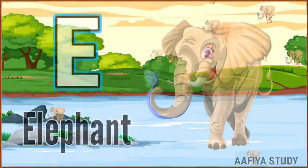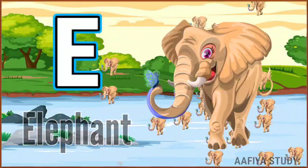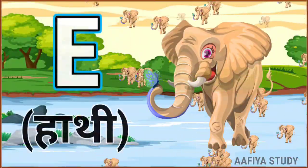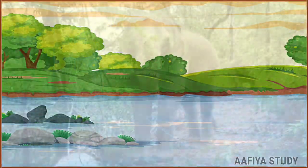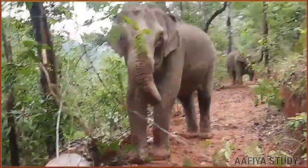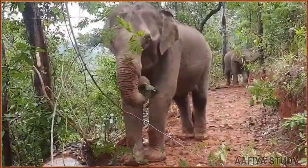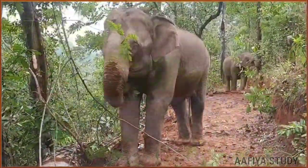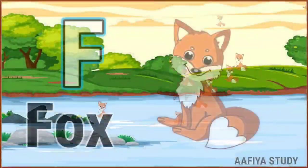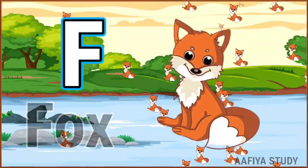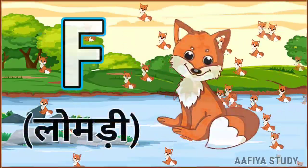E for elephant, elephant means haki. F for fox, fox means nombri.